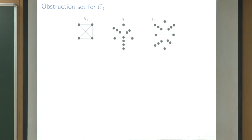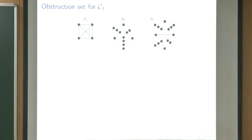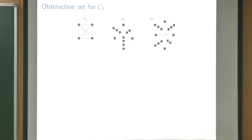Now for the interesting part: characterizing the obstruction set of C3. First, K4 is in the obstruction set of C3, because for any search strategy — monotone, connected, lazy, or agile — you always need four searchers on a complete graph K4, since the robber can always flee to the unoccupied vertex. But after any contraction, only K3 remains and three searchers suffice. So K4 has parameter four but every contraction has parameter three.